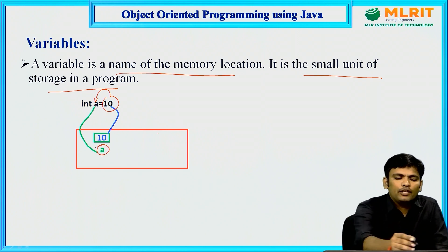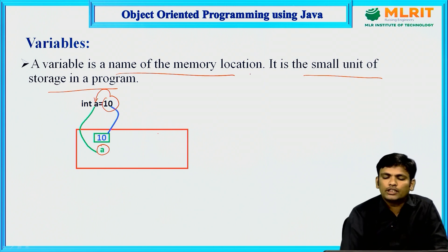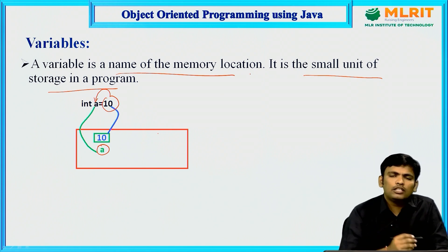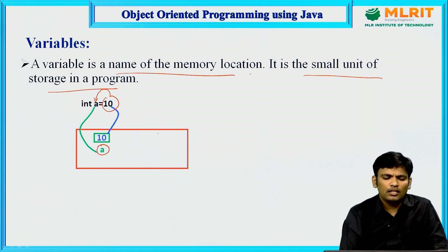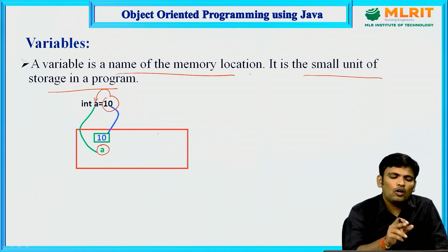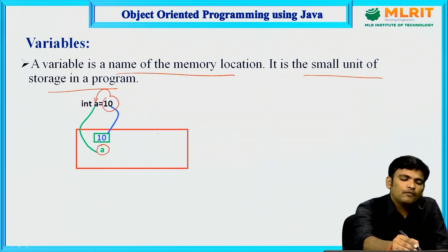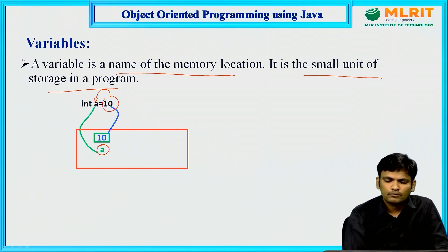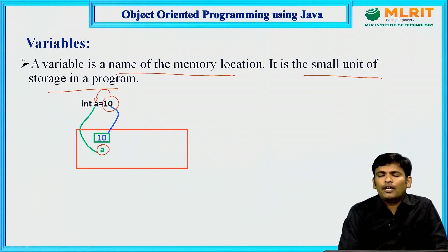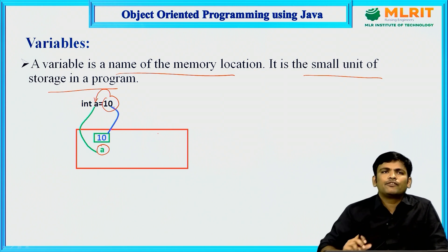A variable is nothing but the name of the memory location and it is a small unit of storage in a program. It is a temporary storage — these variable values will be stored in RAM, which is volatile memory. Whenever your machine is switched off, all variable data will be erased. In another way, we can define a variable as a container where you can store a value.